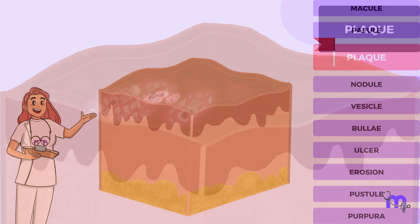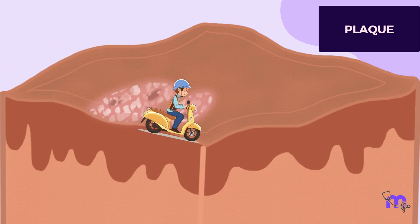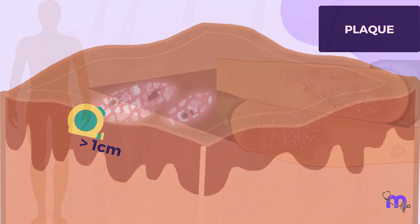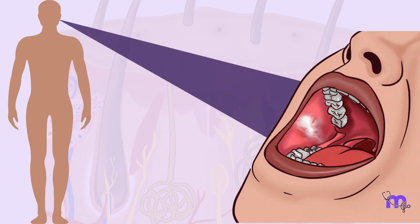Next we have a plaque, which unlike a papule is a raised lesion larger than one centimeter in diameter. Psoriasis, a skin condition, often shows up as plaques. In the oral cavity, leukoplakia is an example of a plaque-like lesion.